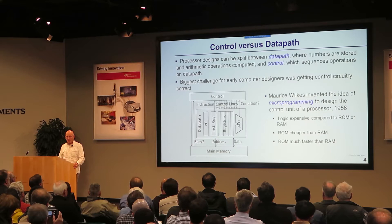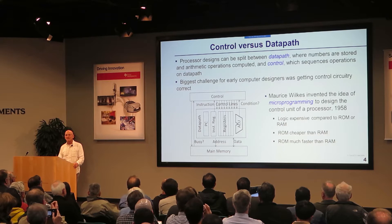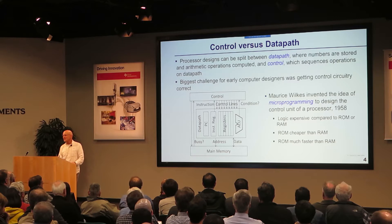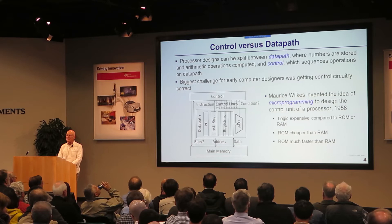One of the biggest problems for computer design then and today is control — that's the hardest thing to do. How are they going to get all these independent business units to agree on the same instruction set? They decided to bet on microprogramming, embedded by Maurice Wilkes, one of the pioneers of computing. He thought it would be a lot easier to design control if you did it via a memory.